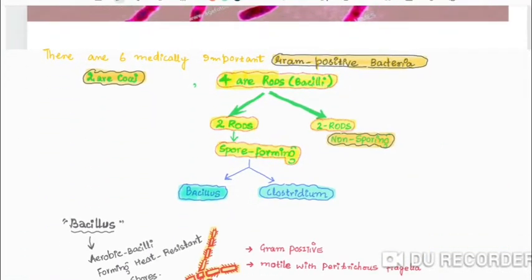There are 6 medically important gram positive bacteria. There are 2 cocci and 4 rods or bacilli. In the 4 rods, 2 rods are spore forming and 2 rods are non-spore forming. Today's topic is Bacillus anthrax, which is a spore forming rod, which we will study.